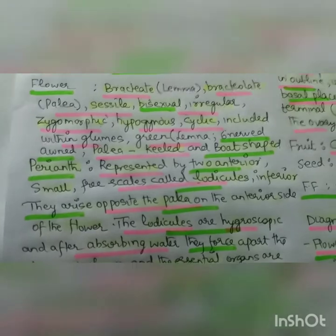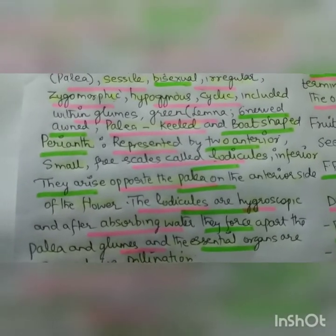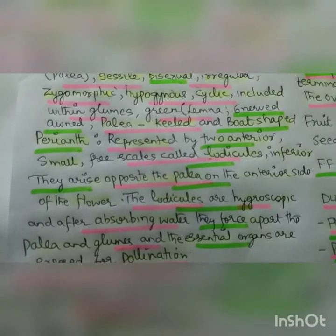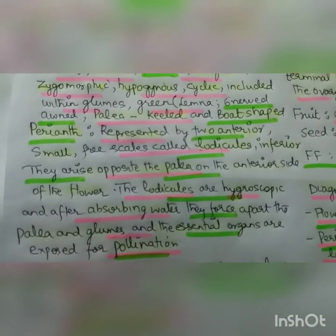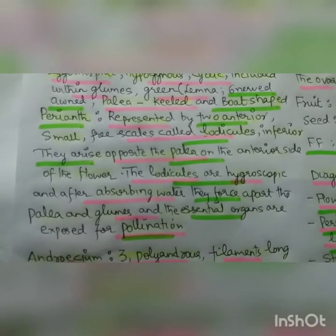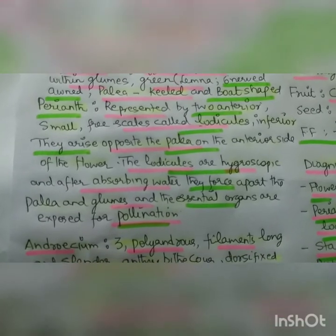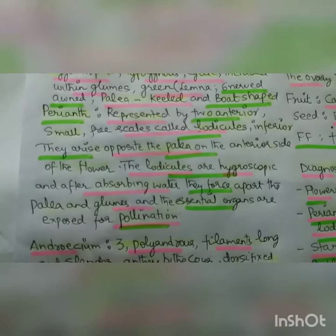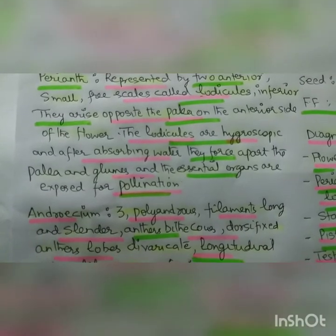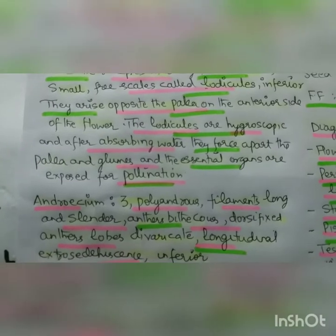Which of the lodicules is keeled and boat-shaped? The perianth is represented by two small interior free scales called lodicules. Due to the hypogynous condition, they are inferior. They arise opposite to the palea on the interior side. The lodicules are hygroscopic, and after absorbing water, they force apart the palea and glumes so that the essential organs are exposed for pollination.